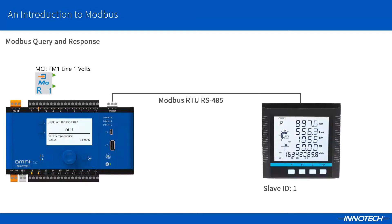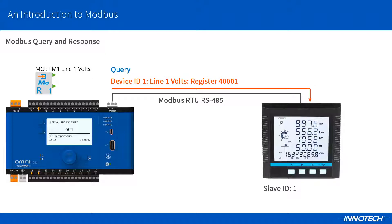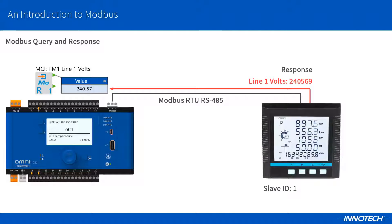In this example, Omni has been configured with the Modbus protocol using RTU and is asking the power meter for the voltage for Line 1. The slave responds back with the value as shown. The Modbus comms input used in the Omni configuration just needs to be configured with the correct parameters to successfully ask for the device's register value.